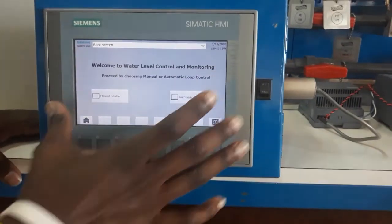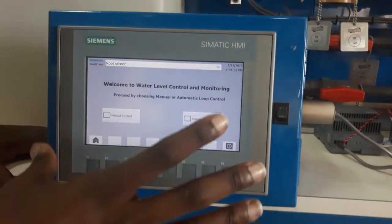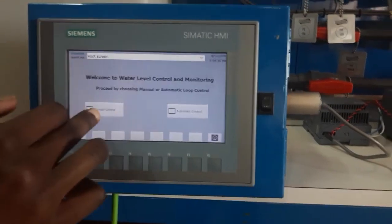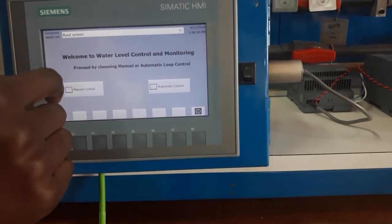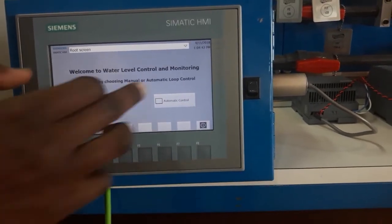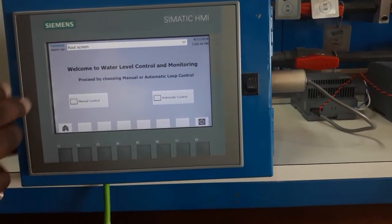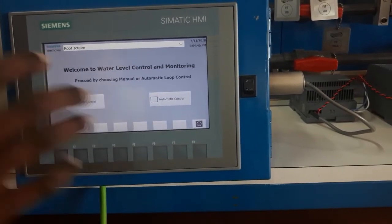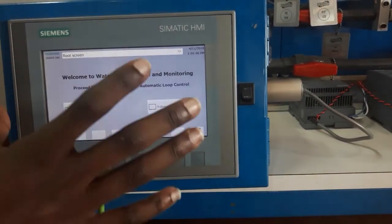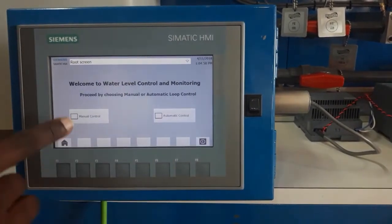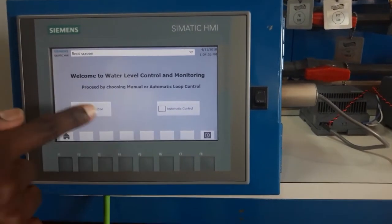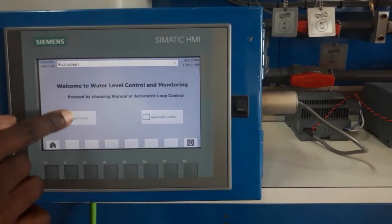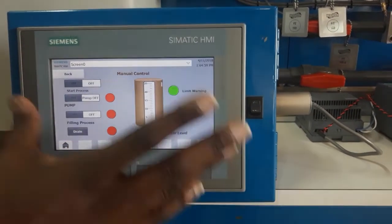As you can see, the first screen or the home page, you can see there's manual control and automatic control. As I said earlier, to understand how automatic control works, you must first understand how manual control works. But for this demonstration, I won't show you how the manual control works. I'll provide information in the documentation. But you can just have a look on the layout of the manual control.